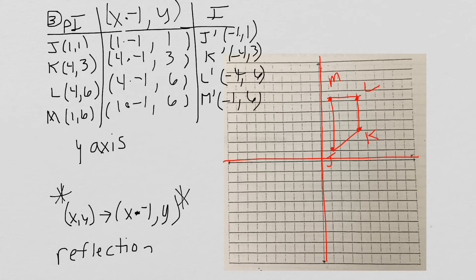Now we check by standing on the Y-axis. We go 1 to the right to get to J, so we go 1 to the left to get J prime at negative 1, 1. We go 4 to the right to get to K, so 4 to the left gives K prime at negative 4, 3. We go 1 to the right for M, so 1 to the left gives M prime at negative 1, 6. We go 4 to the right for L, so 4 to the left gives L prime at negative 4, 6. Connect the dots — ordered pairs line up with the graph.